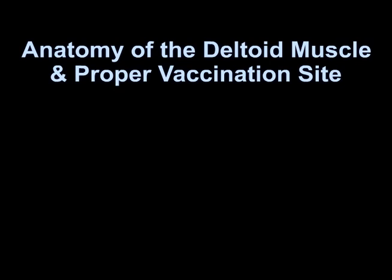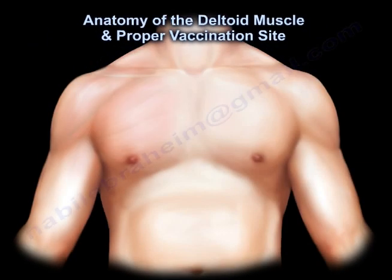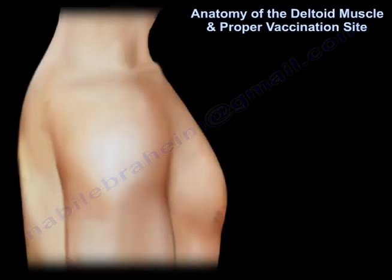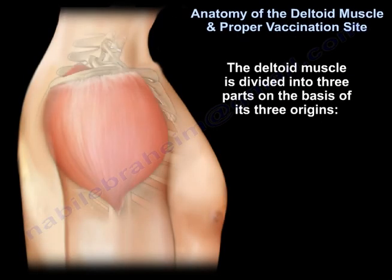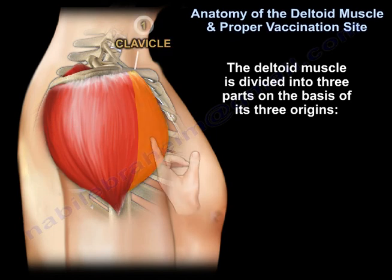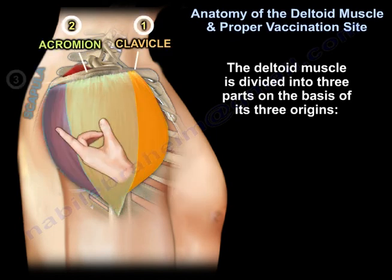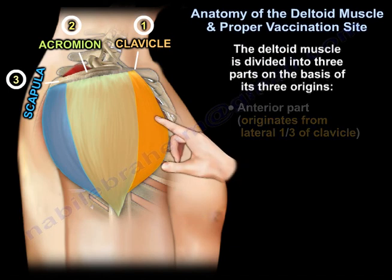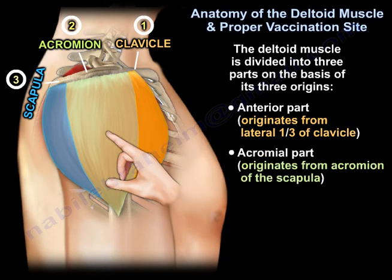Anatomy of the deltoid muscle and proper vaccination site. The deltoid muscle is divided into three parts on the basis of its three origins. The anterior part, or the clavicular part, originates from the lateral third of the clavicle, and there is an acromial part that originates from the acromion of the scapula.